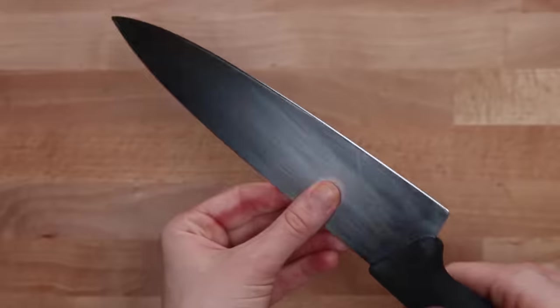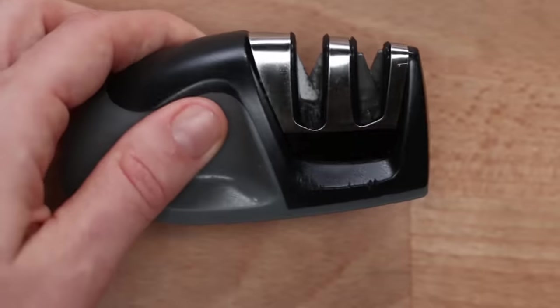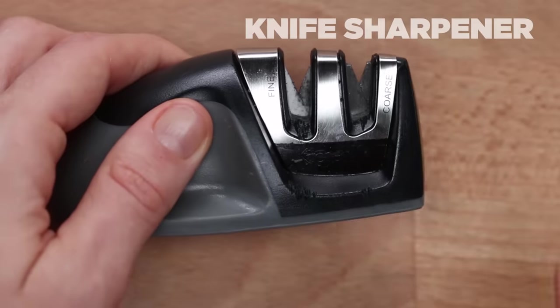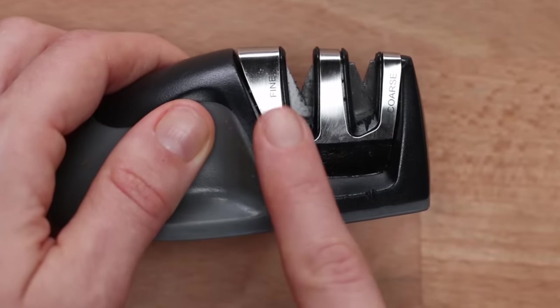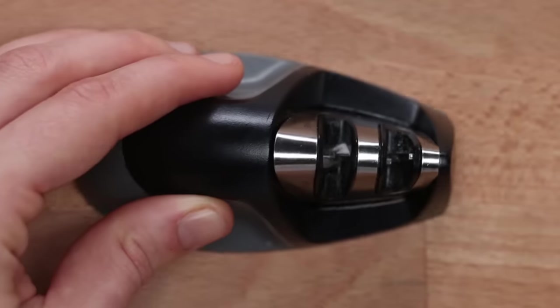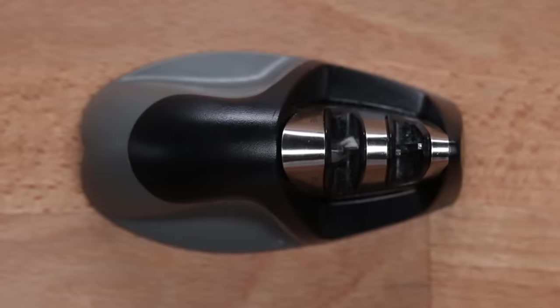To sharpen your knife, you're going to need a tool that will take off a little bit of the steel. This is like a very basic version of a knife sharpener. As you can see, we have the coarse side and the fine side.